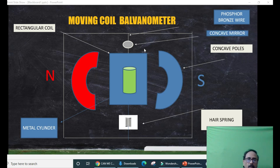To note down the deflections, we have to make the lamp and scale arrangement. When the current is passed through the coil, it will be deflected.